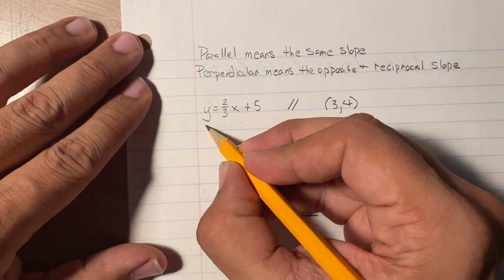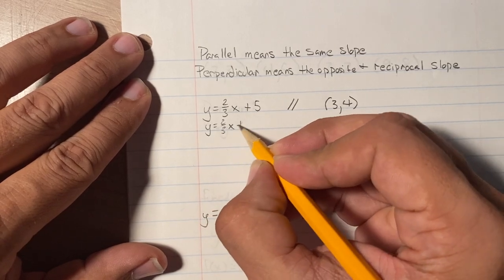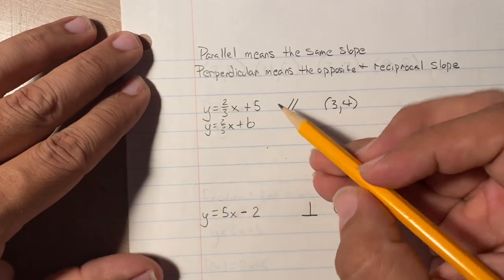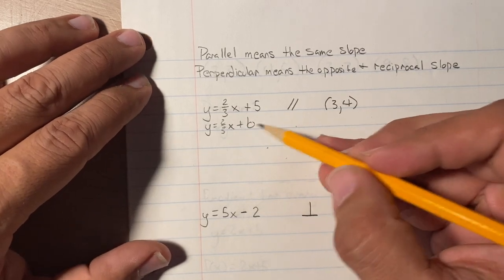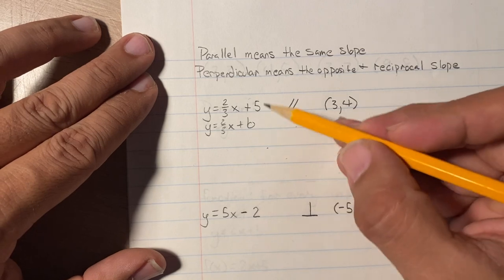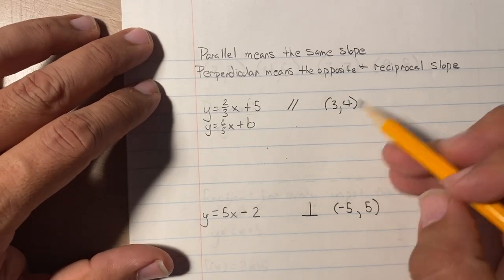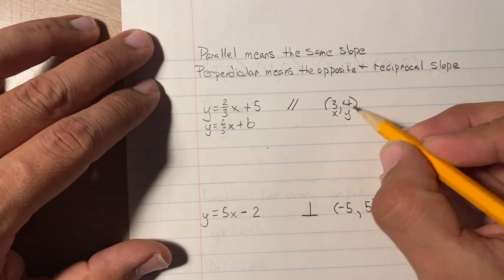Okay, so right now they tell us it's parallel. That means I know that the slope is exactly the same. What I don't know is the y-intercept, so I wrote plus b here. It's always going to be plus b no matter what is written up here. You're going to ignore this completely. Then we're going to plug these numbers in. This is x and this is y.